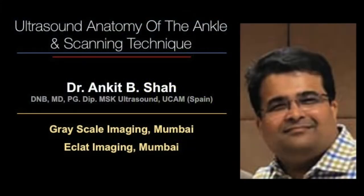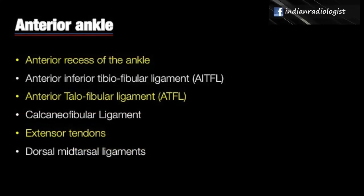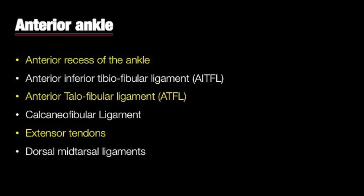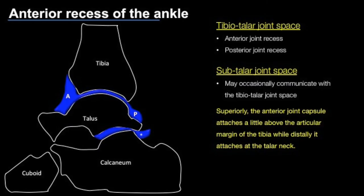In the anterior quadrant, we assess the anterior recess of the tibiotalar joint, the anterior inferior tibiofibular ligament, the anterior talofibular ligament, the calcaneofibular ligament, the extensor tendons, and the dorsal midtarsal ligaments. The anterior recess of the tibiotalar joint is easily assessed by routine ultrasound techniques, whereas the posterior joint recess may be difficult to assess unless the joint is distended by a lot of fluid. The subtalar joint space may communicate with the tibiotalar joint space in approximately 10% of patients.